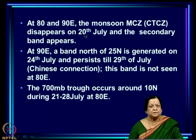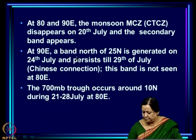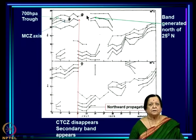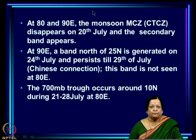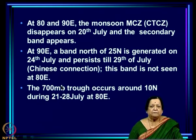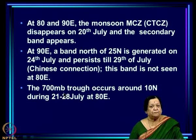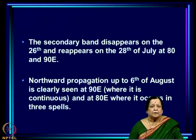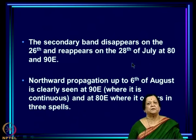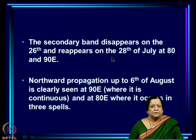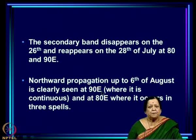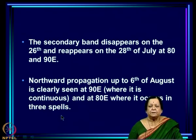At 80°E and 90°E, the monsoon MCZ or CTCZ disappears on 20th July. The secondary band appears at 90°E; the band north of 25°N is generated on 24th July and persists till 29th July — this is the Chinese connection, not seen at 80°E. The 700 mb trough occurs around 10°N during 21st–28th July, soon after the MCZ disappears. The secondary band disappears on 26th but reappears on 28th, and northward propagation then occurs up to 6th August — continuous at 90°E and in 3 spells at 80°E.